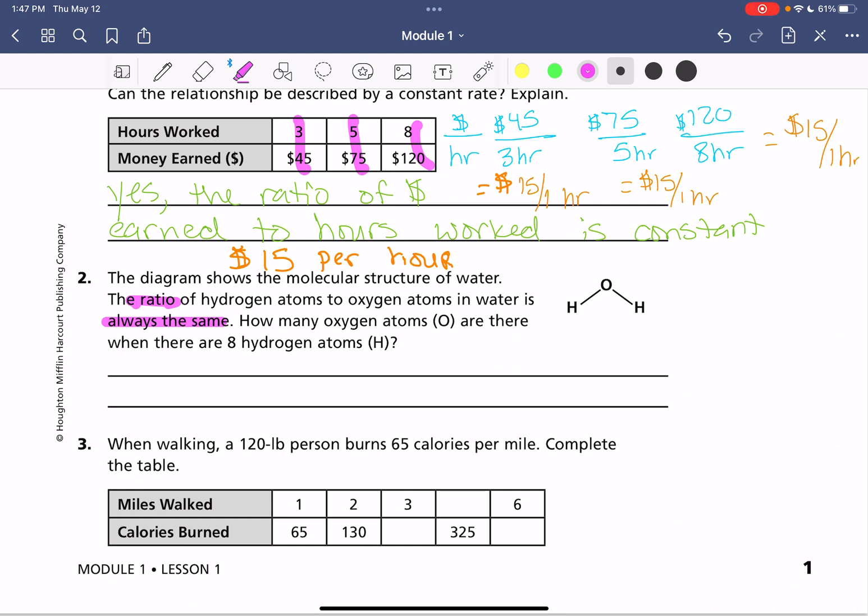How many oxygen atoms are there when there are 8 hydrogen atoms? So we're writing out our ratio here. Write out what we know. We have 2 oxygen atoms for every... I'm sorry,